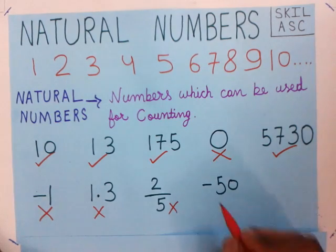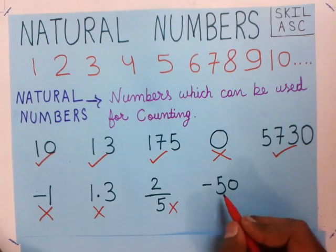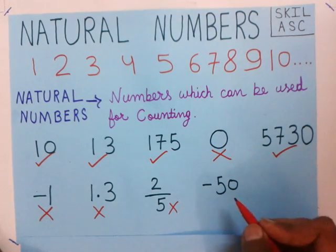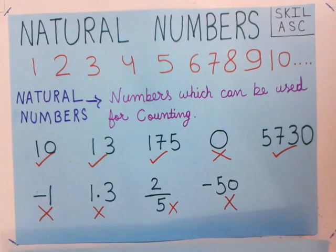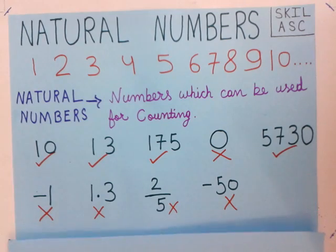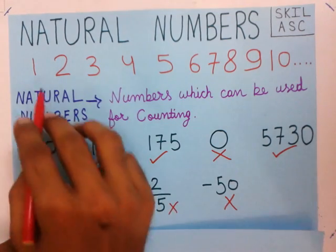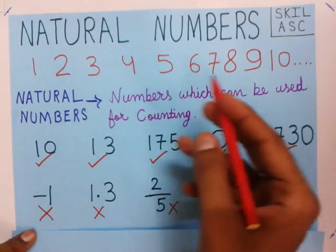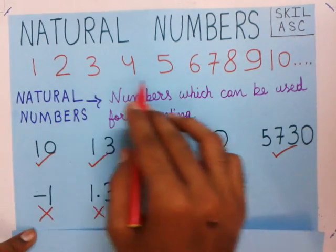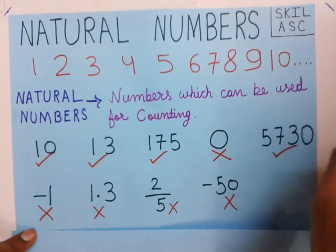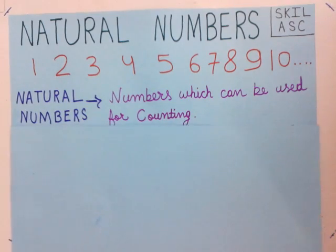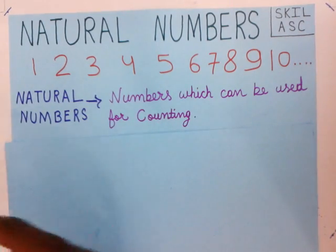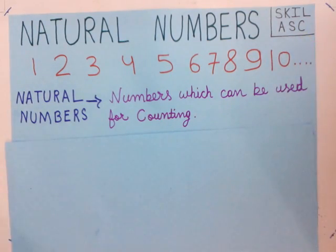Minus 50 is again a negative number, not used while counting, so it is not a natural number — we cross it out. To summarize: natural numbers are the numbers used while counting — 1, 2, 3, 4, 5, 6, 7, 8, 9, 10, 11, 12, 13, and so on. I hope you have understood. You can also learn about whole numbers and integers in my other videos at the Skill ASC channel. Thank you.